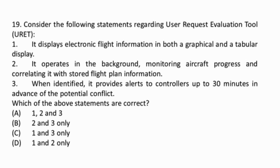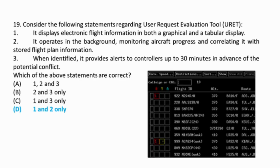Question 19: The user request evaluation tool is a decision support tool for en route controllers. It displays electronic flight information in both a graphical and a tabular display. It operates in the background, monitoring aircraft progress and correlating it with stored flight plan information. It provides capabilities including an automated conflict probe that projects potential conflicts up to twenty minutes in the future, checks that clearances are conflict-free, and allows for trial planning of route amendments to check for potential conflicts. Thus statements one and two are correct.